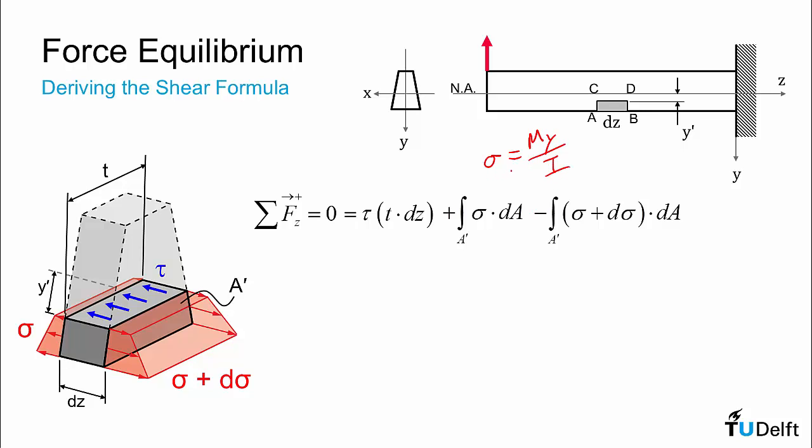What we can then do is recall the flexure formula that sigma is equal to My over I. And we can substitute this in to our equation. And we get the following. What we can also see here is if we expand out this term, we see the addition of the integral of My over I dA minus the integral of My over I dA because you can separate out this dm.